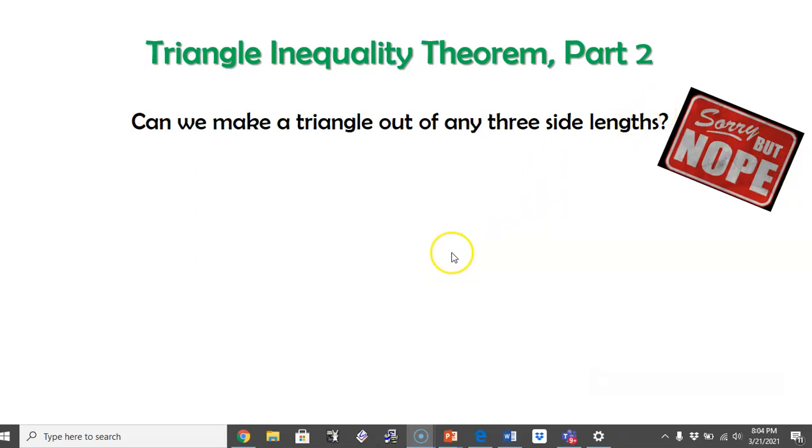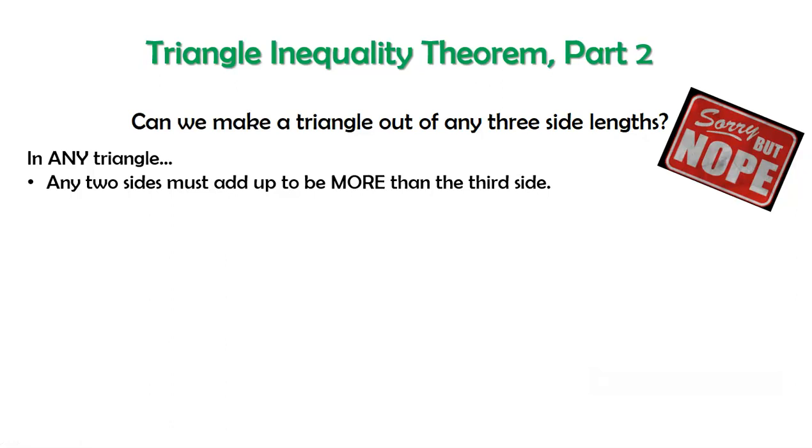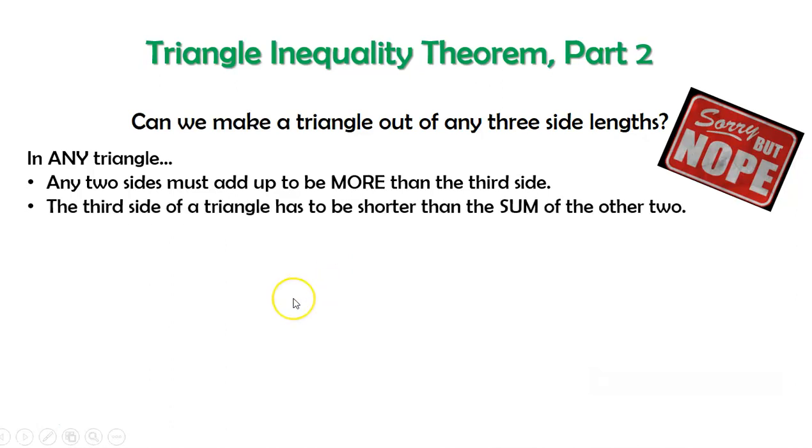So how do we know if we can make a triangle out of three side lengths? Here's the rule. Any two sides have to add up to be more than the third side. So I have to be able to pick any two sides of the triangle and if I add them together that number has to be bigger than the third side. Another way to say that would be that the third side has to be shorter than the sum of the other two.